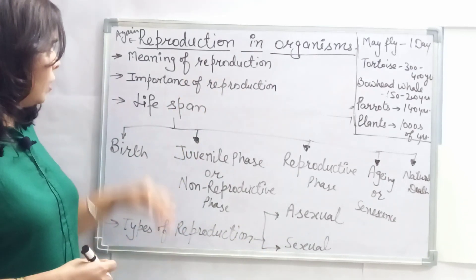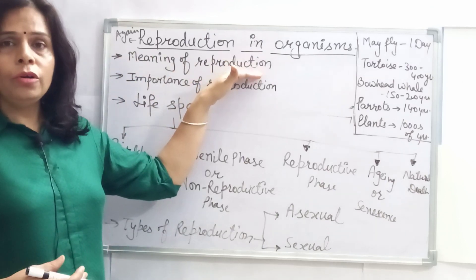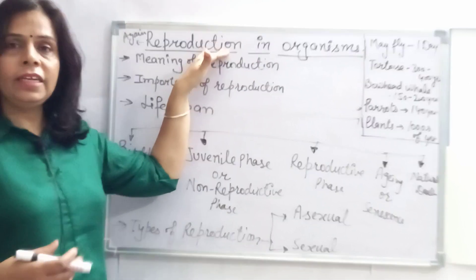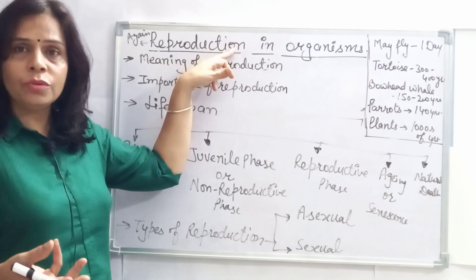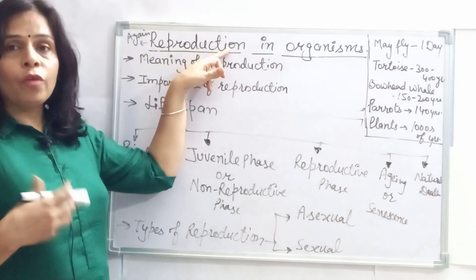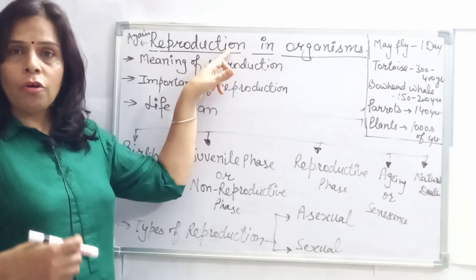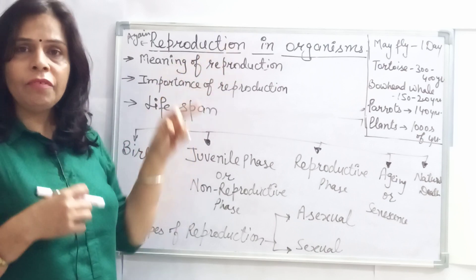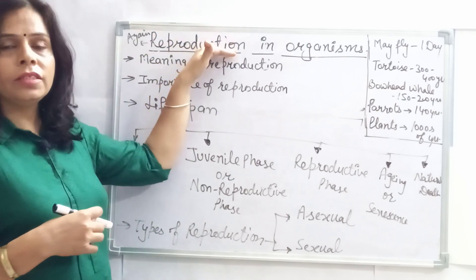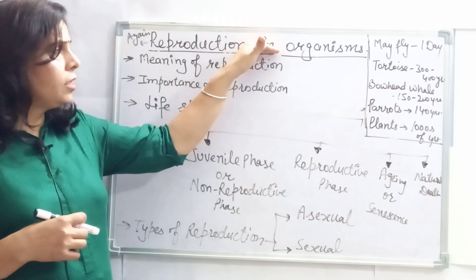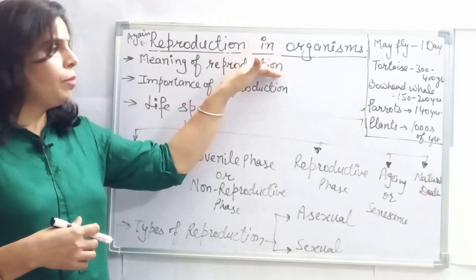First, let us understand the meaning of reproduction. The word itself explains its meaning: 're' means again, and 'production' means to produce — so it means to produce again. What to produce again? Living beings. It is the process by which all living organisms produce offspring or babies of their own kind. In this class, we will go into more detail.